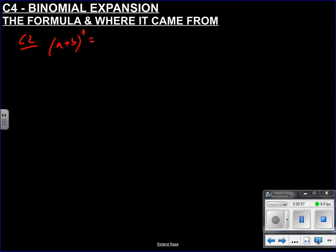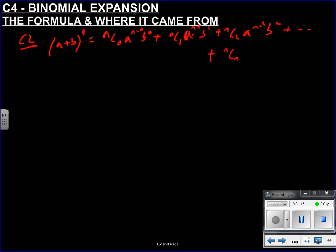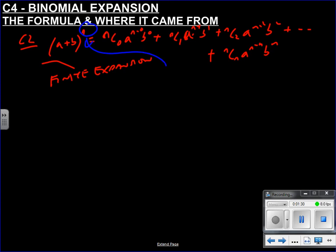So (a+b)^n equals n-choose-0 times a^n times b^0, plus n-choose-1 times a^(n-1) times b^1, plus n-choose-2 times a^(n-2) times b^2, and so on. This was a finite expansion where n, the power in question, was always a positive integer — that's what that fancy notation means.